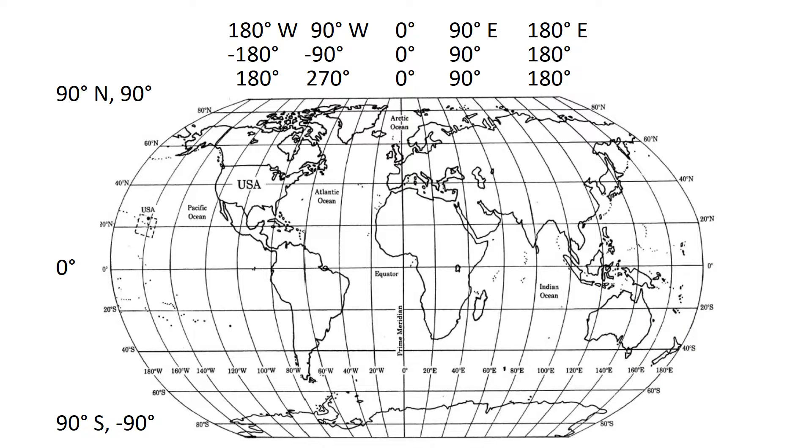So just briefly, latitude is how far north or south you are and longitude is how far around the earth you are. By convention, the latitude zero is on the equator and longitude zero goes through London, the Greenwich Observatory.